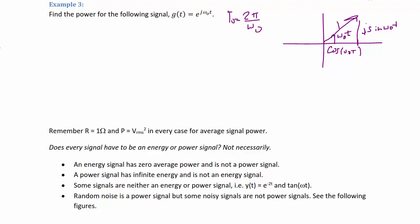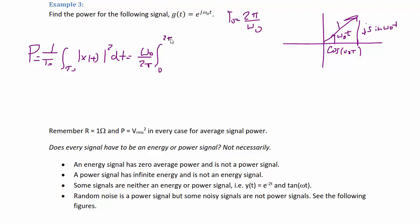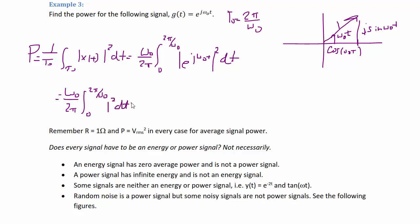So P = (1/T₀) times the integral over T₀ of the magnitude of x(t)² dt, which equals (ω₀ / 2π) times the integral from 0 to 2π/ω₀ of the magnitude of e^(jω₀t)² dt. Since the magnitude of e^(jω₀t) is 1, this equals (ω₀ / 2π) times the integral from 0 to 2π/ω₀ of 1 dt, evaluated to give 1 volt squared.